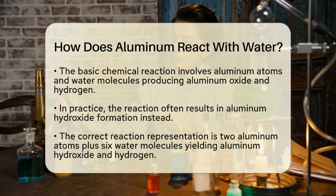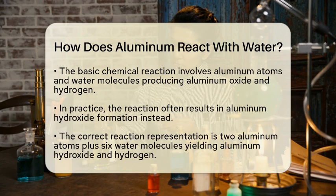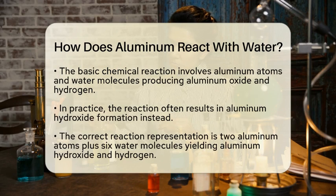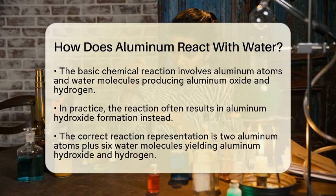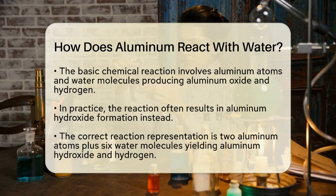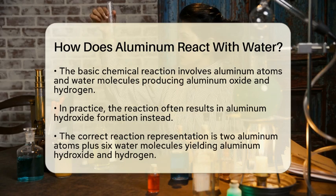In practice, though, the reaction often leads to the formation of aluminum hydroxide instead. The correct representation for this scenario is two aluminum atoms plus six water molecules yielding two aluminum hydroxide molecules and three hydrogen molecules.